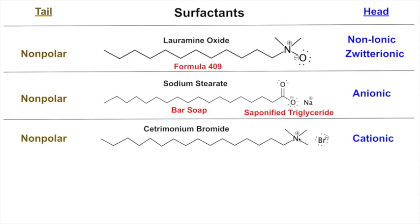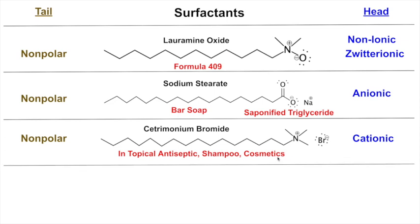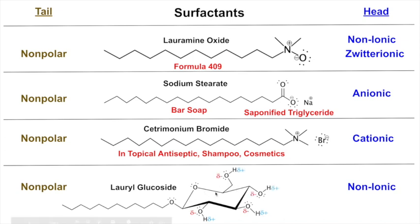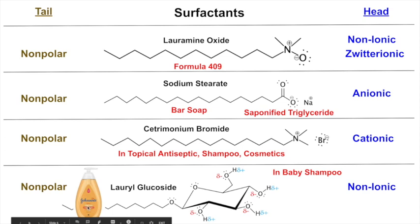There's another interesting one with a non-polar tail and a cationic head — instead of an anion, a cation — and it's in topical antiseptics, shampoos, and cosmetics. Then there's lauryl glucoside — non-polar tail of 12 carbons — it's non-ionic but has alcohol groups with delta minus and delta plus, so it has polarity due to hydrogen bonding. This is in baby shampoo, specifically Johnson & Johnson's No More Tears — it's milder because it only has partial charges, not a full-on charge like bar soap. It's made from cornstarch glucose and hydrocarbon chains from coconut fat.